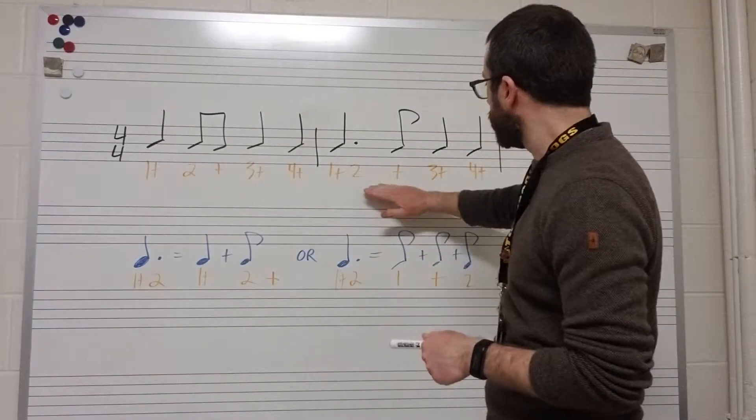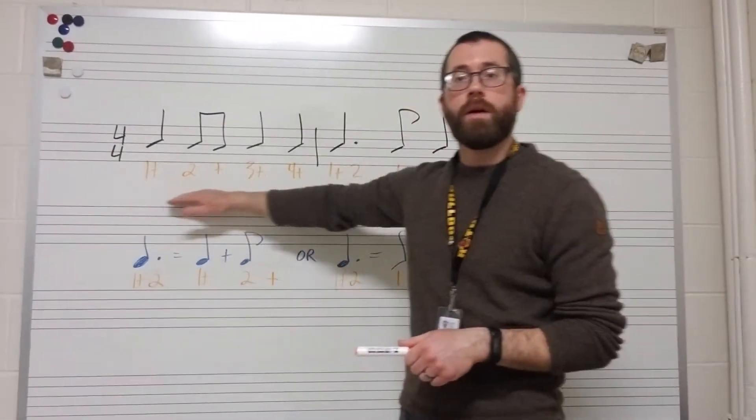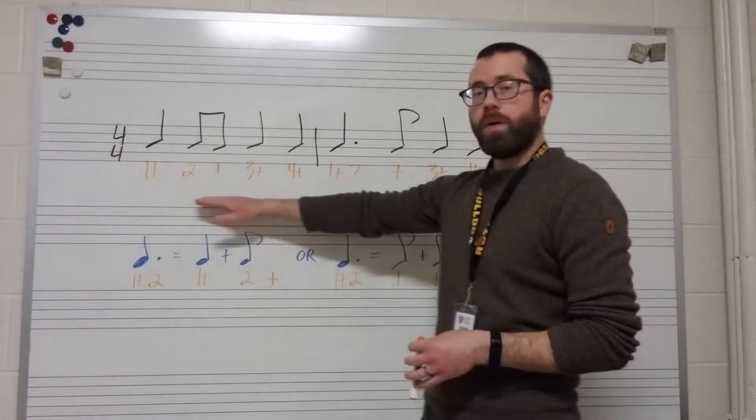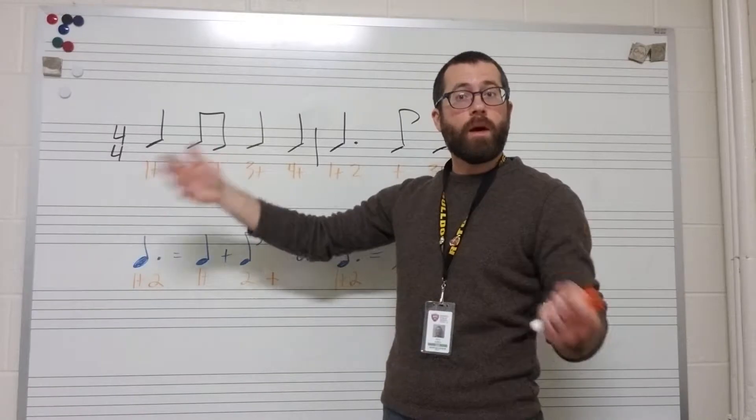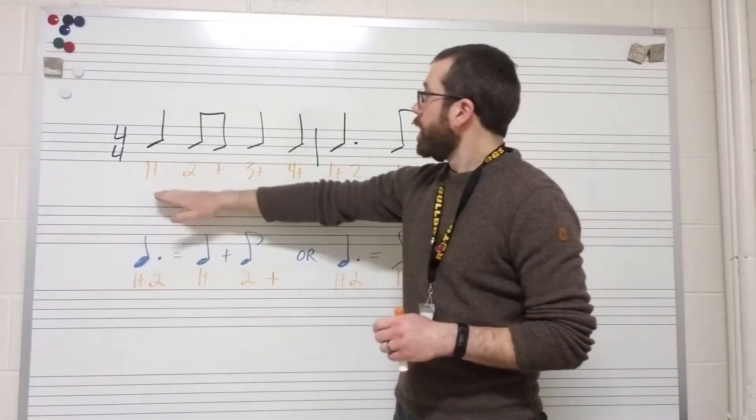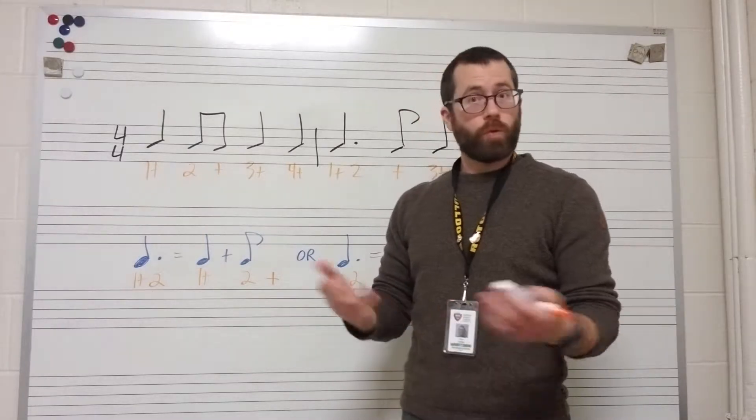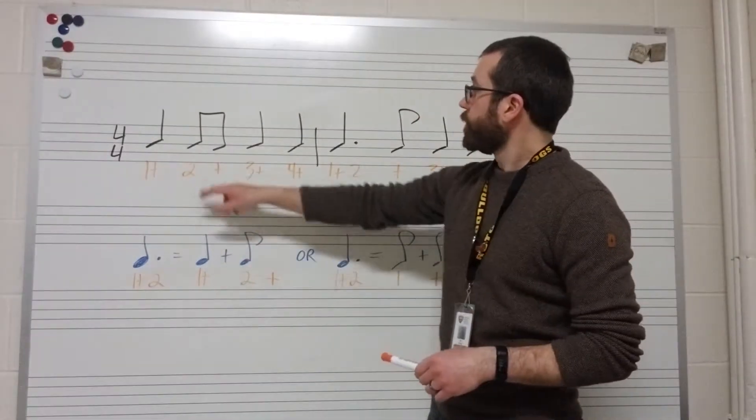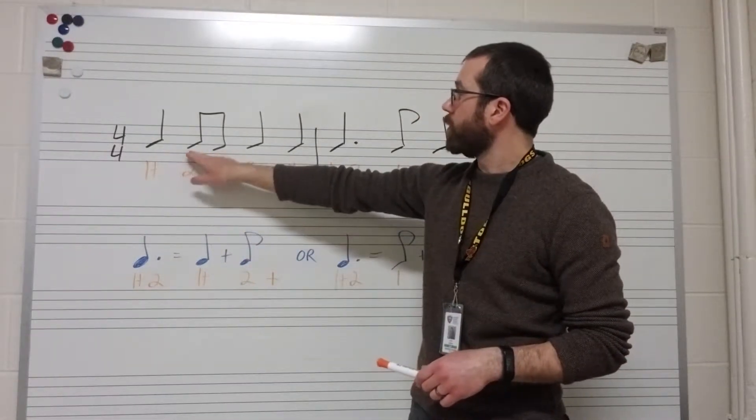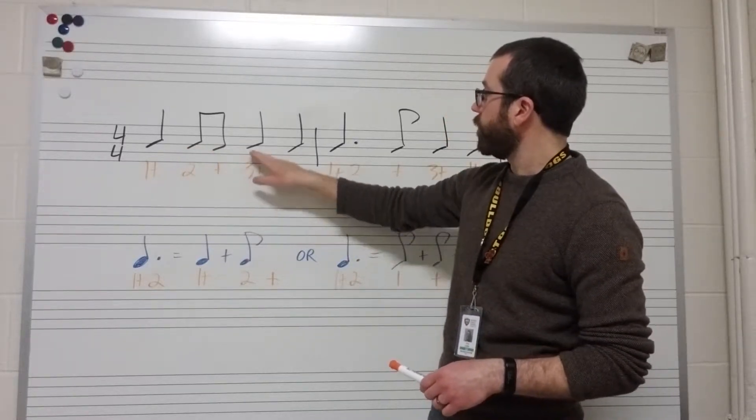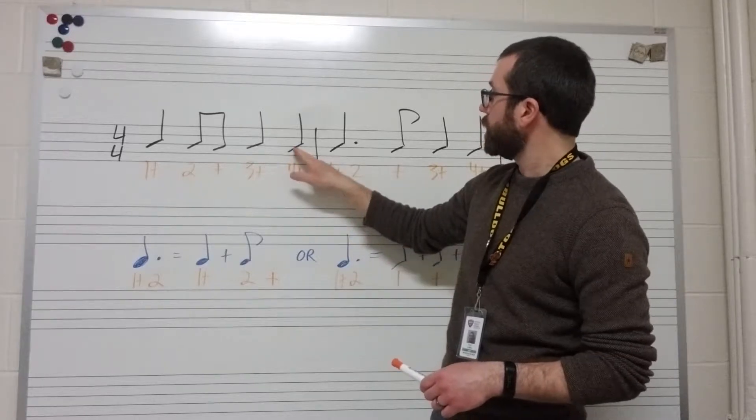So now, let's take a look at the rhythm up here. And so I have just a short example. I'll walk us through the counting, and then I'll clap and count it for you. So here we have a quarter note. We count that as one and because quarter notes are worth two eighth notes. We have two underneath this eighth note. We have an and underneath this eighth note. And then if we continue on, we have three and, four and.